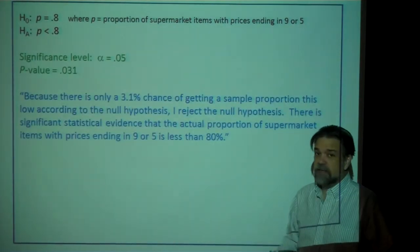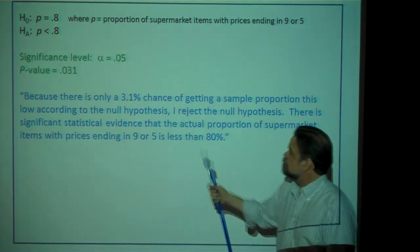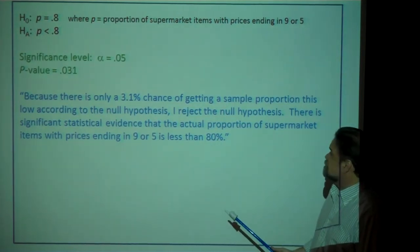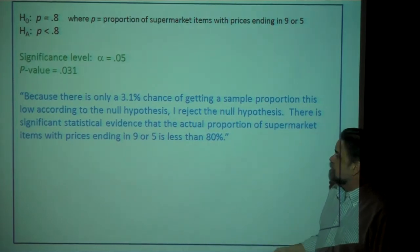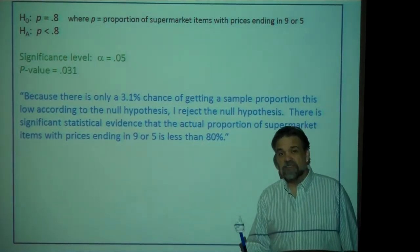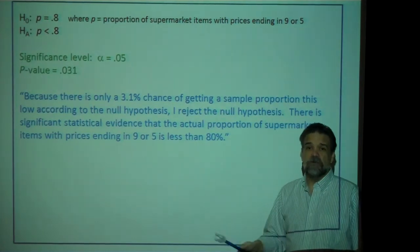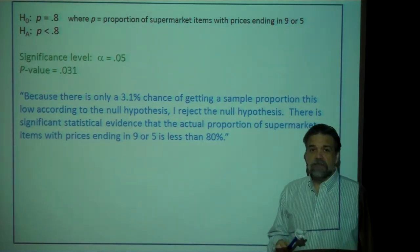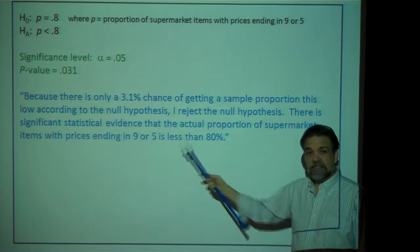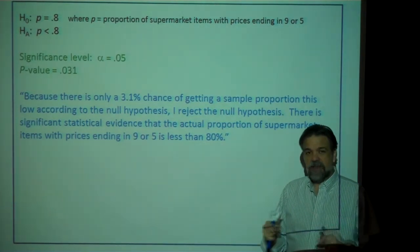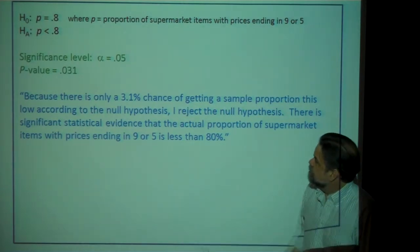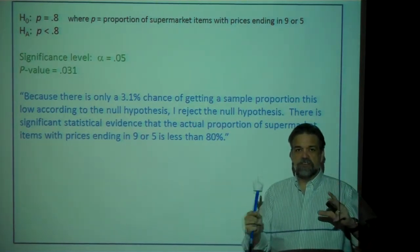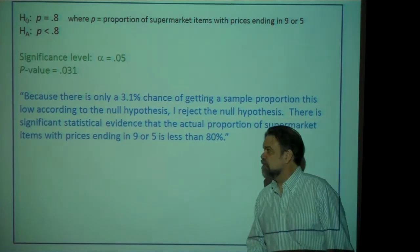I got to reject the null hypothesis because my P-value is less than my alpha. I say: because there is only a 3.1% chance of getting a sample proportion this low according to the null hypothesis, I reject the null hypothesis. There is significant statistical evidence that the actual proportion of supermarket items with prices ending in 9 or 5 is less than 80%. If you're not good at coming up with your own sentence, pause and copy this down — then make a skeleton with blanks where the P-value or null hypothesis goes. You'll thank me.